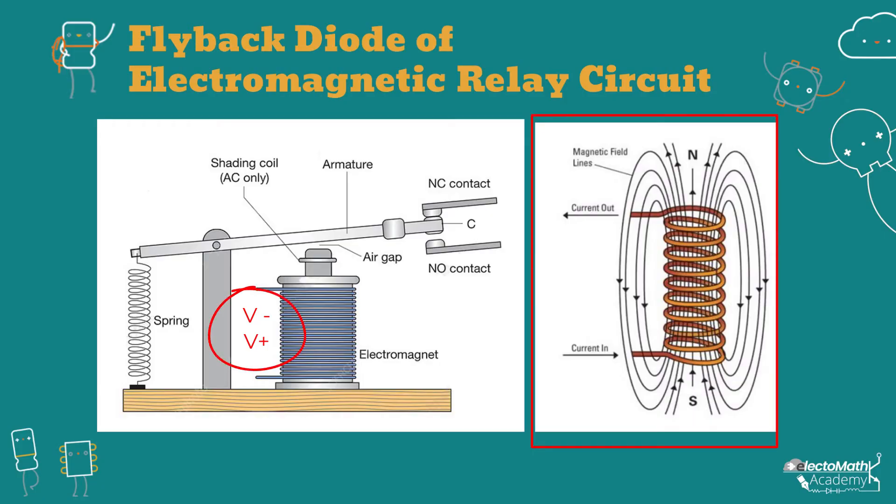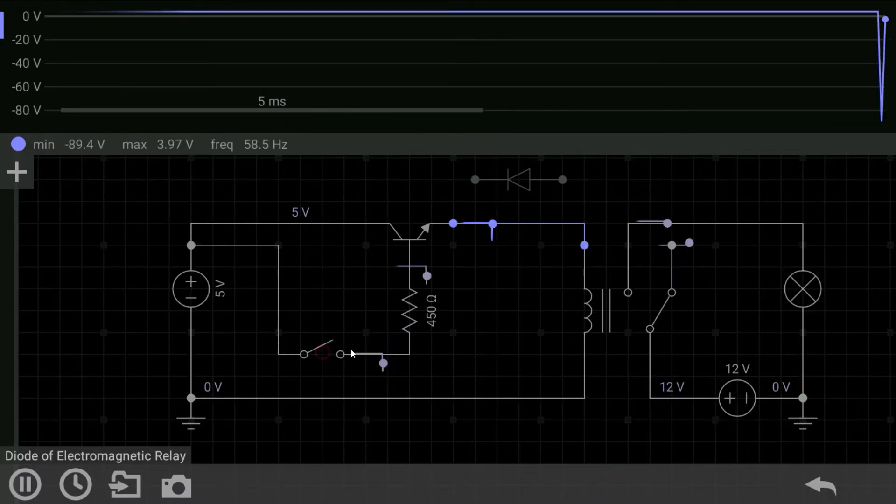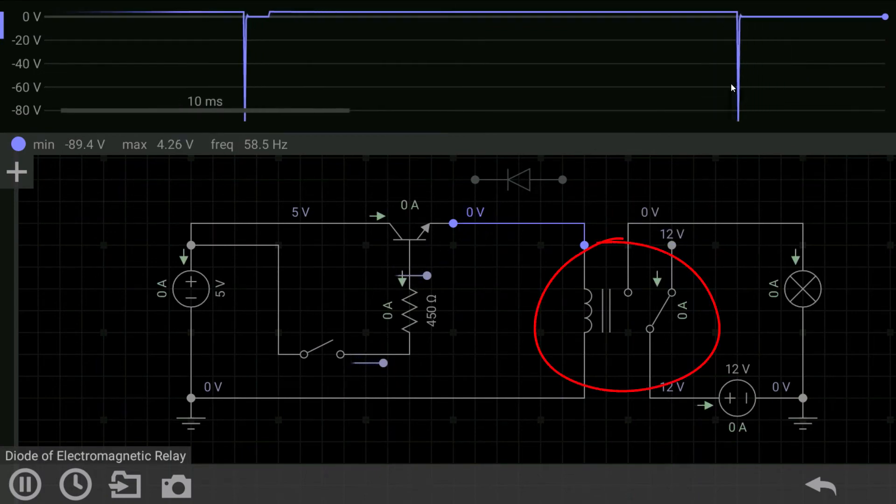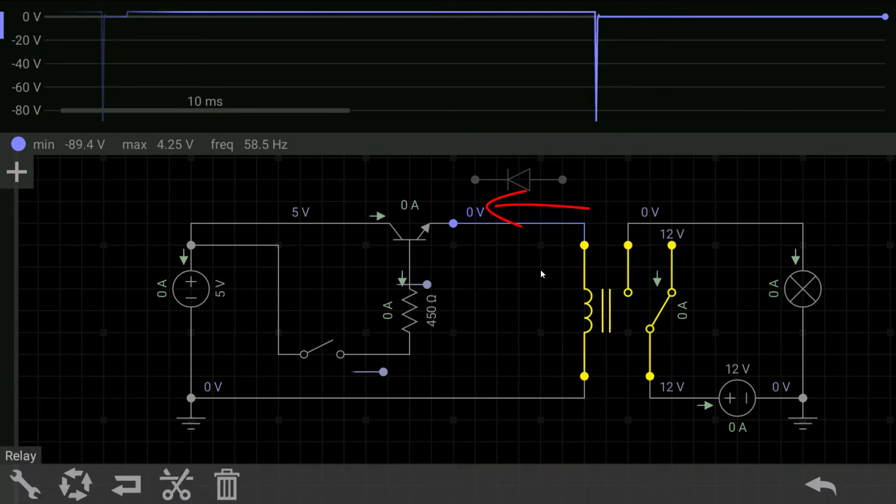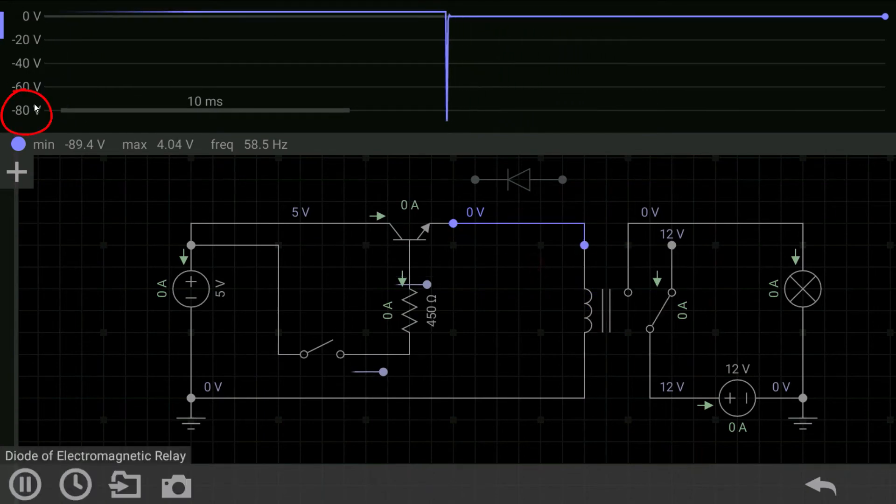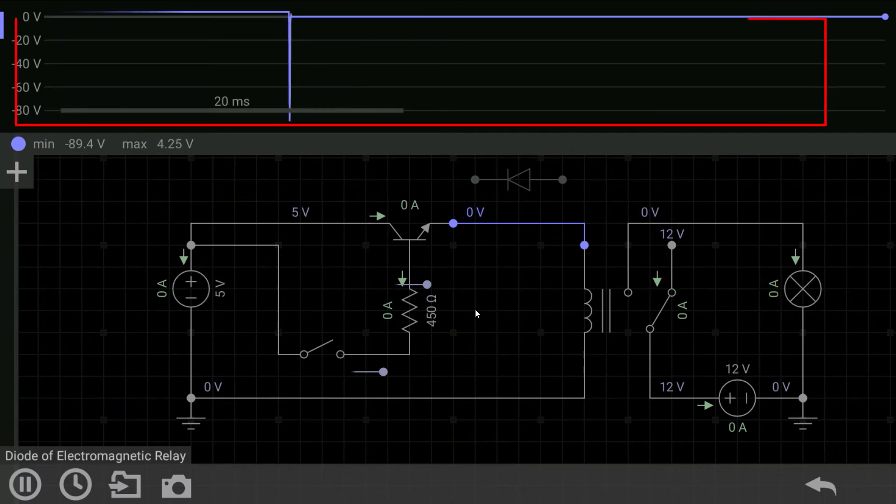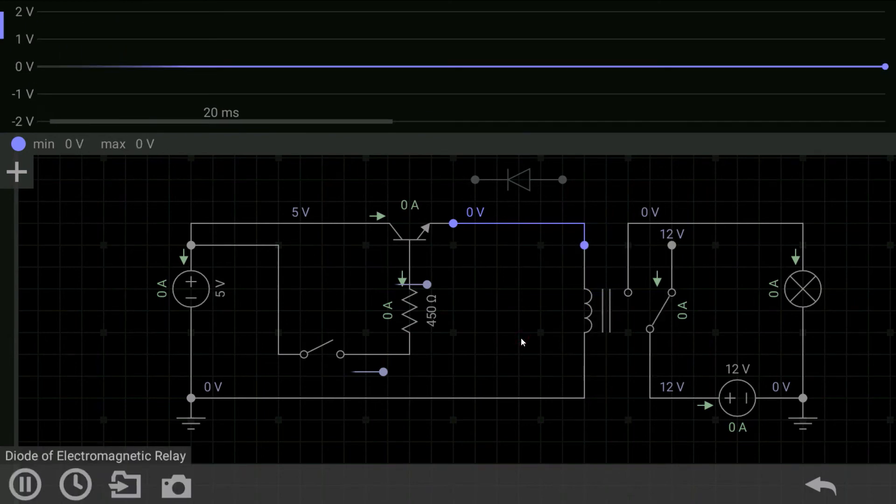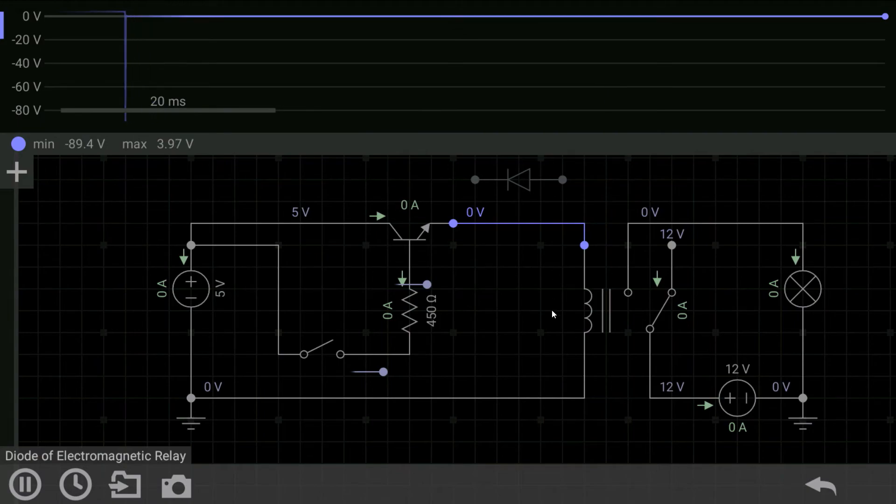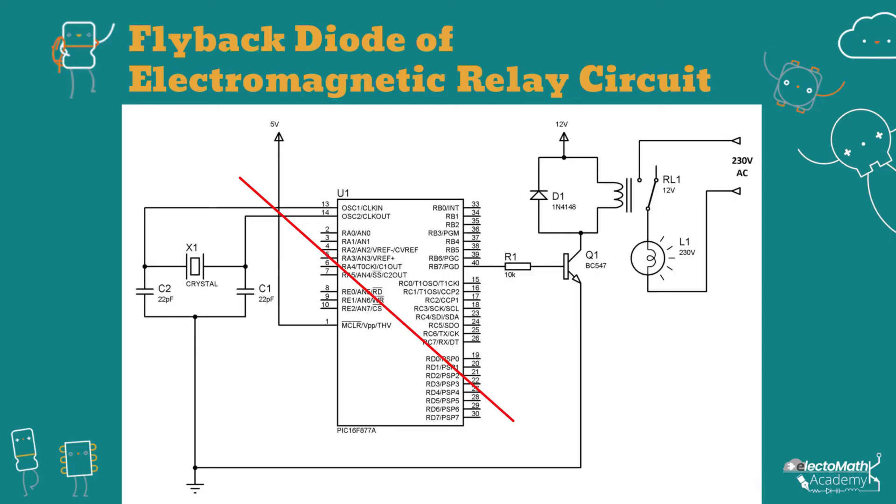But if I cut the base biasing of the transistor, look - the electromagnetic relay fires back in the reverse direction with more than 50 volts back EMF, even though it's a 5 volt relay. This creates a lot of noise. This is normal behavior for an electromagnetic relay, but this back EMF voltage might destroy your circuit. It could break your microcontroller, transistor biasing, or input devices.